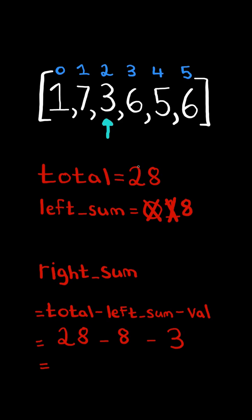We calculate the right sum. It equals 17, and once again, the left sum is not equal to the right sum. So we take the current value we are on and add it to left sum, and we continue.